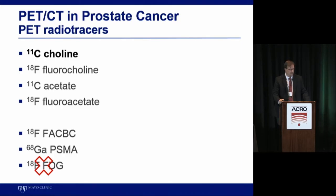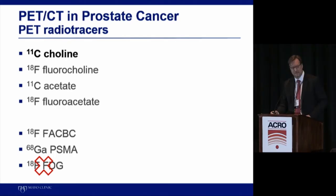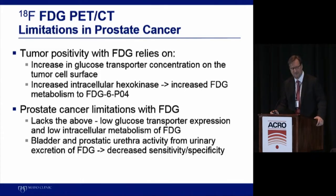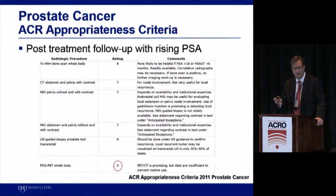F18 fluorocholine has slightly different chemistry than C11 choline. F18 has a half-life of 111 minutes and can be shipped more easily than C11, which has a 20-minute half-life. We have two cyclotrons and are doing 40 to 60 of these a week. C11 acetate is also used extensively, as well as F18 fluoroacetate, F18 fluorocyclobutane carboxylic acid, and gallium-68 PSMA. F18 FDG for diagnosing metastatic prostate cancer with rising PSA is not very good unless the patient is developing neuroendocrine differentiation.